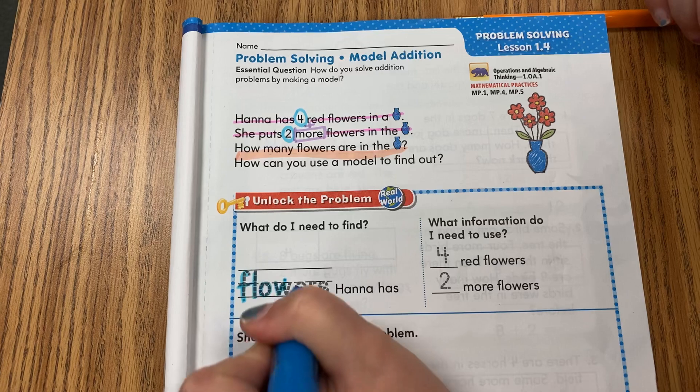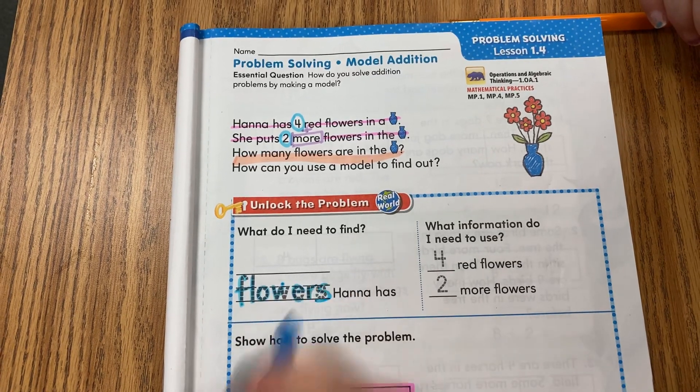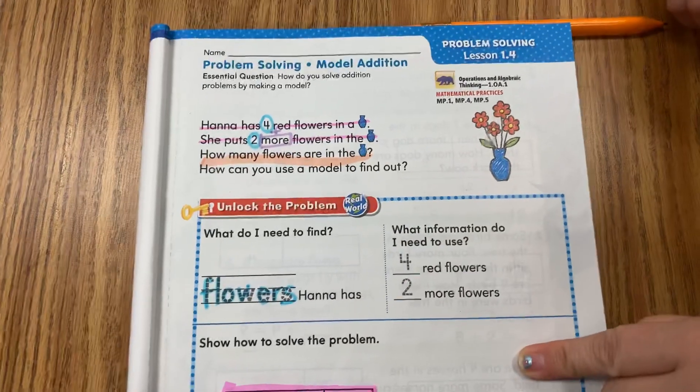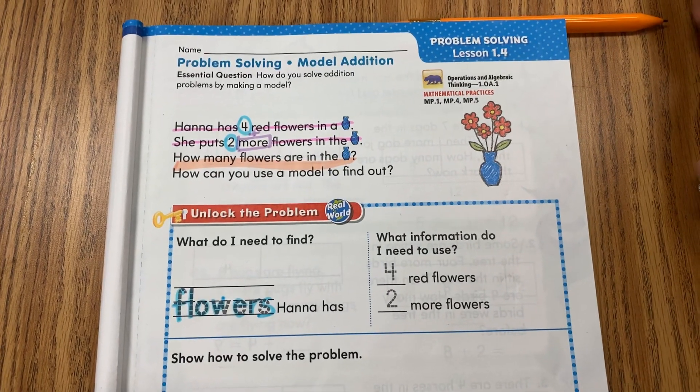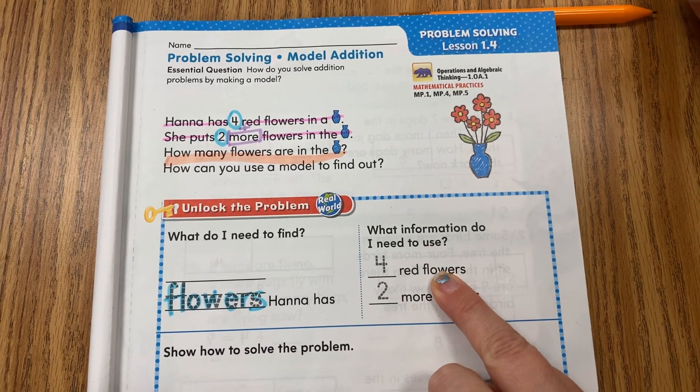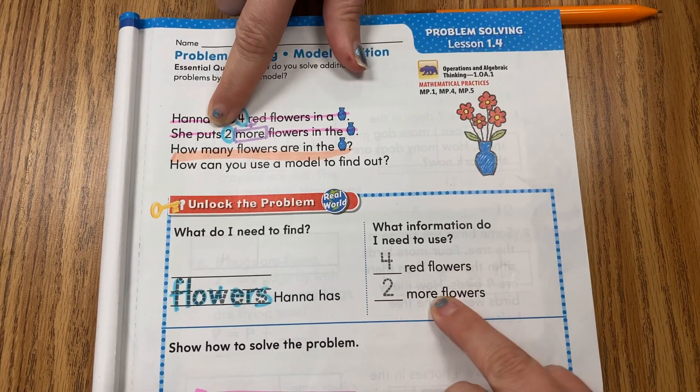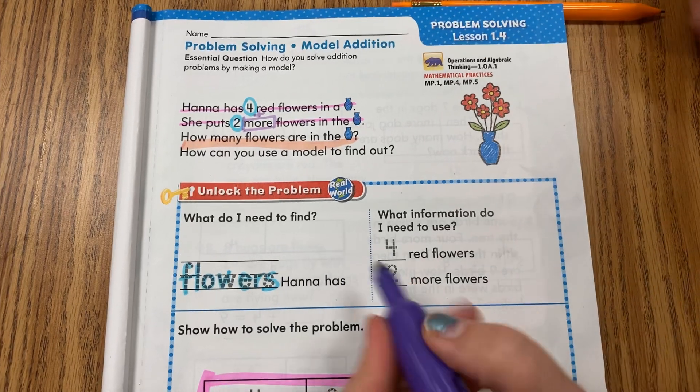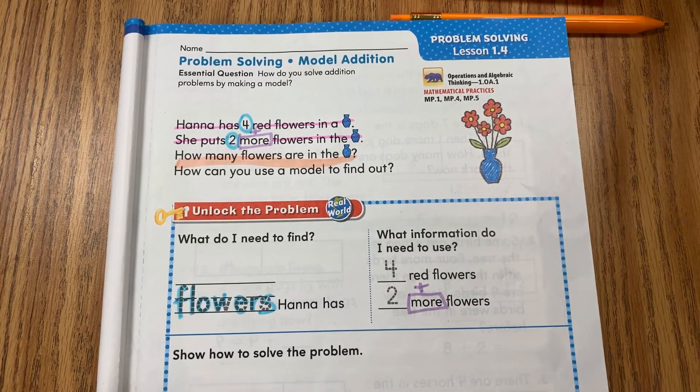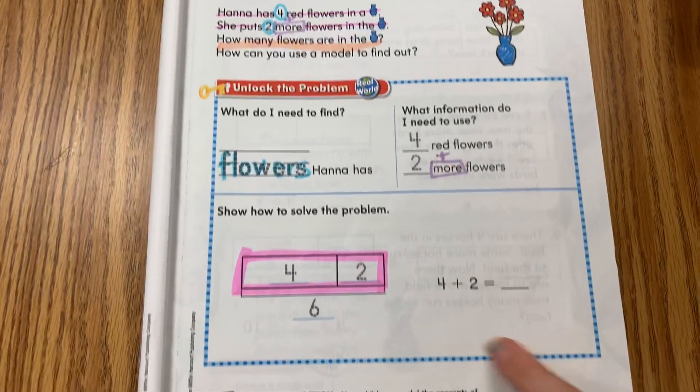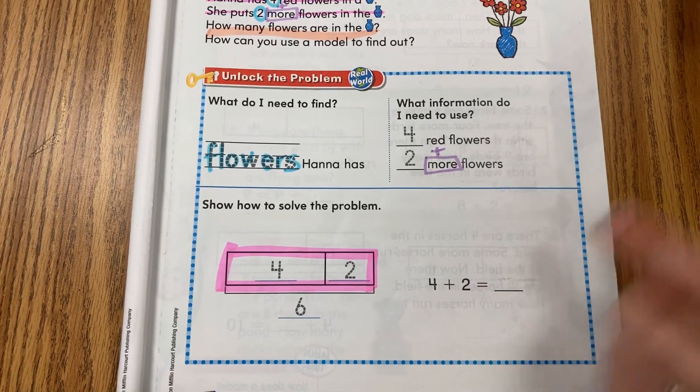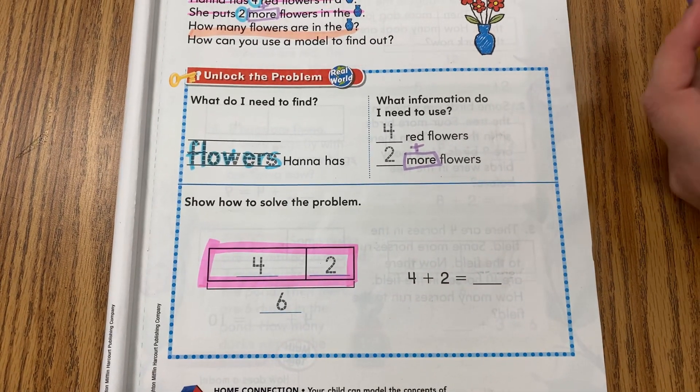The whole thing that we're looking for is her flowers. The information I already have is that she has four red flowers in the vase and that she has added two more. Again, it's this magic word right here, 'more,' which meant addition.